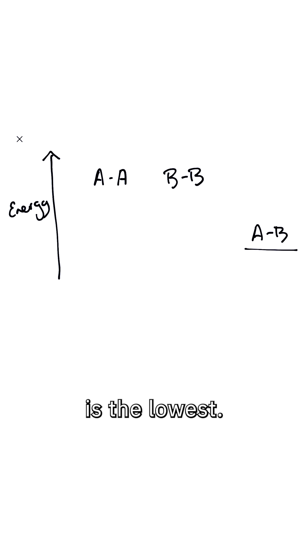Suppose we have three molecules, AA, BB, and AB. If I can compute the ground state energies of these three molecules and AB is the lowest, then the simple picture is that AA will react with BB to form AB and this reaction will happen.